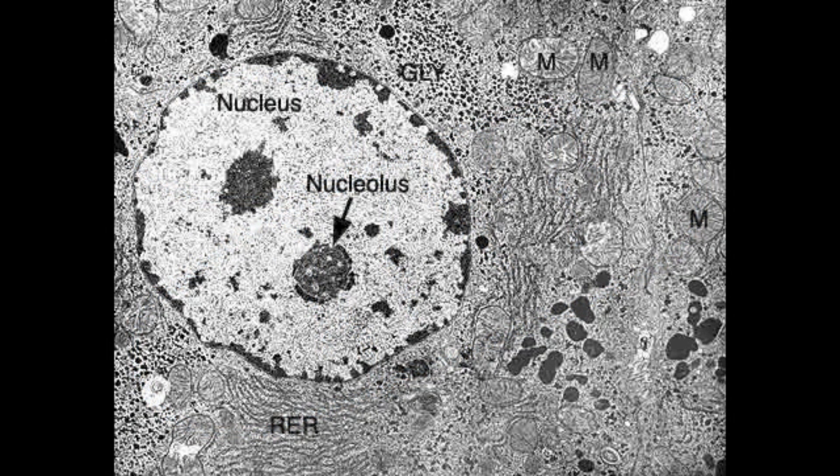This next image serves to show us the relative sizes of the nucleus compared to the mitochondria, labelled M, and the rough endoplasmic reticulum, RER. You can see how much bigger the nucleus is than the latter two.